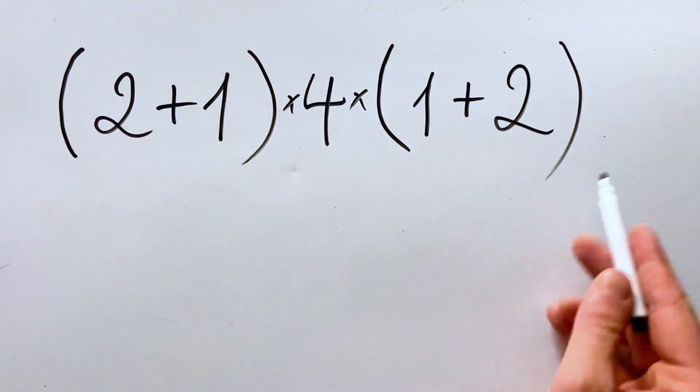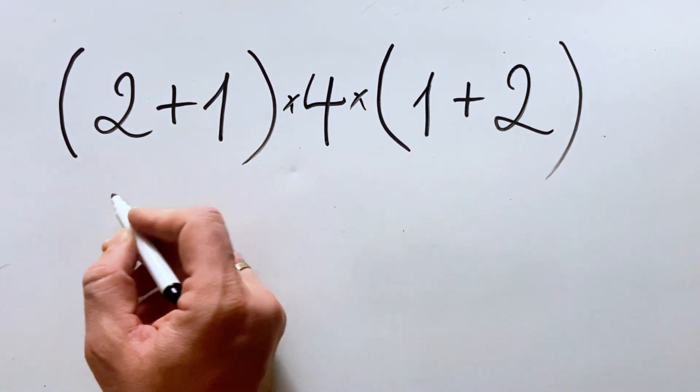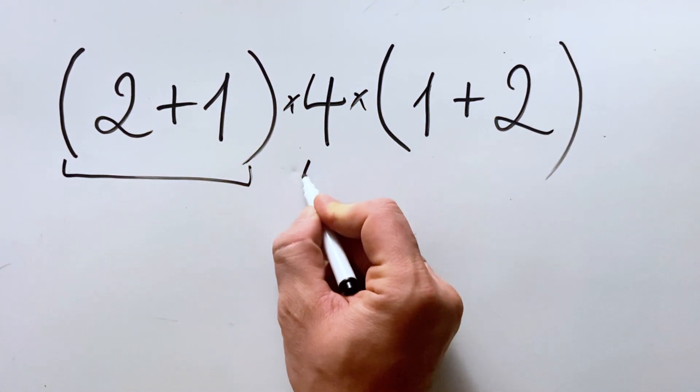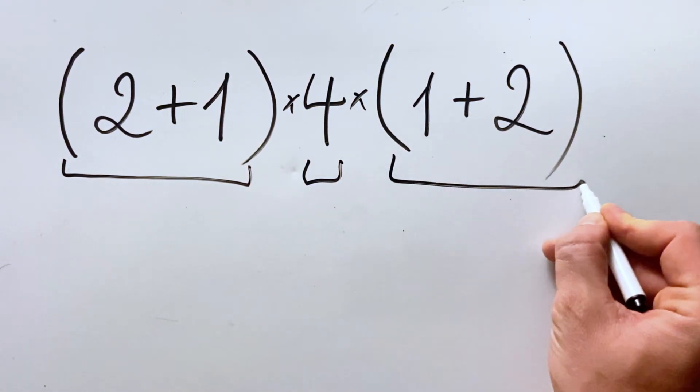So what does this mean? Basically, all this is a multiplication of three numbers.